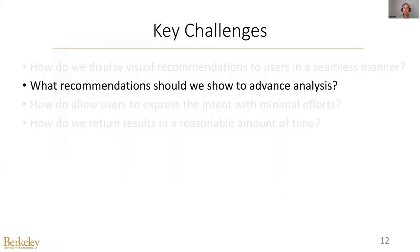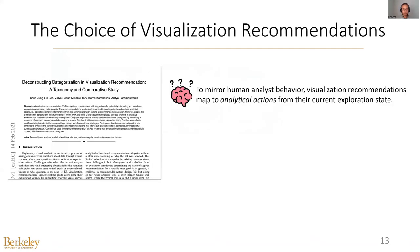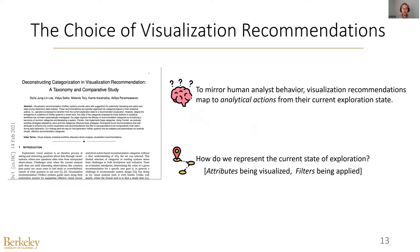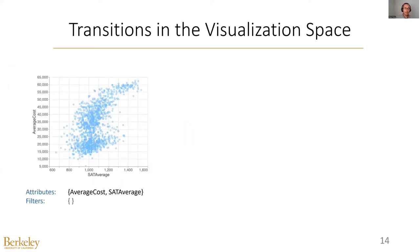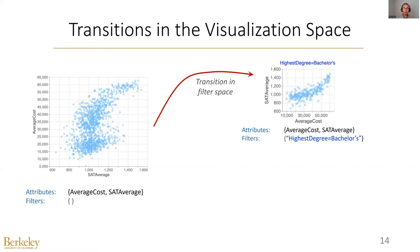The next question is: what recommendations should we show to advance the analysis? Our idea is to model visualization recommendations as a state machine. Each recommendation corresponds to a transition or an analytic action that takes the data scientist from one state to a new one. To represent a state, we use the attributes being visualized and the filters being applied. For example, we have a scatter plot visualizing the relationship between two attributes with no filter for the current state. We can transition this state to a new one in either attribute space or filter space — for instance, adding a filter to allow users to look into the patterns of a sub-population of data.